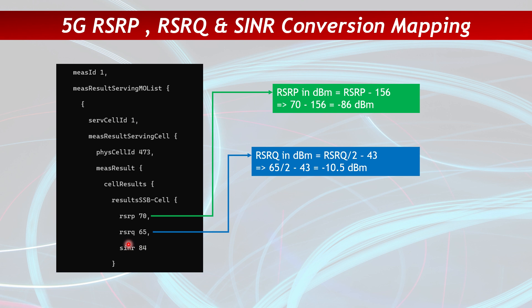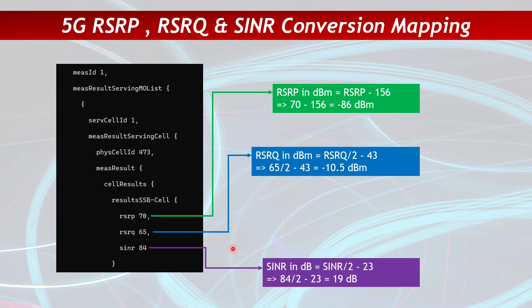For SINR, a reported value of 84 does not mean 84 dB — that's not really possible in radio networks. You have to divide it by 2 and then subtract 23. So 84 divided by 2 minus 23 gives us 19 dB, and that is the actual SINR value for this UE when it sent this report.